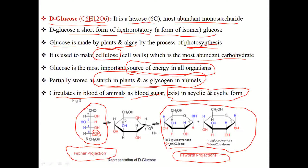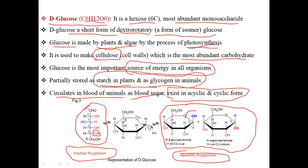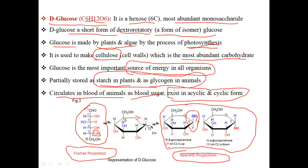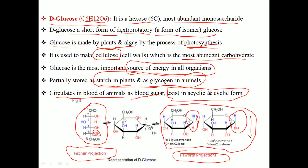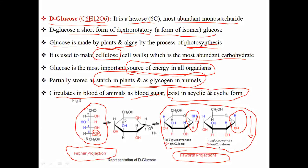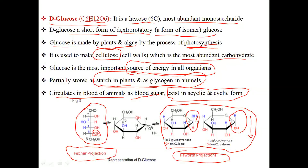In beta-glucopyranose, the OH on carbon one is on the upper side. When the OH at carbon one is on the upper side it is called beta-glucopyranose, and when the OH at carbon one is on the lower side it is called alpha-glucopyranose. This is all about D-glucose.